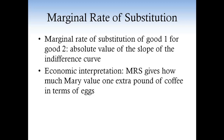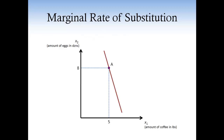Yes. So why does the slope of the indifference curve give us the marginal value of good one in terms of good two? To keep things easy, imagine for a second that the indifference curve passing through basket A is linear. Imagine that the slope is negative three — that is, the marginal rate of substitution is equal to three. Assume that Mary has five pounds of coffee and eight dozen eggs: basket A.